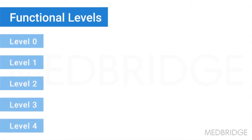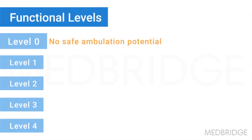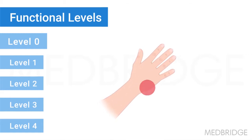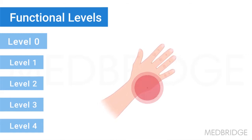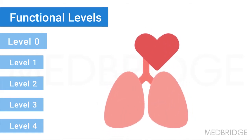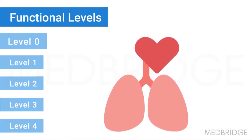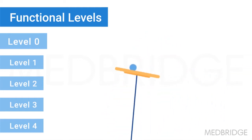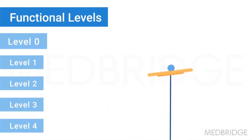Functional level 0 is no safe ambulation potential. These are patients that will not be able to wear prostheses for a myriad of reasons — it could be skin tolerance, mental status, cardiovascular deconditioning, increased balance issues, etc.